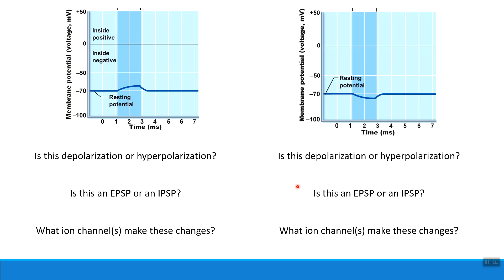We can see this when we look at the changes in membrane charge caused by a message. These two graphs show us the membrane potential, or membrane charge, for the two types of messages. In the first picture, I see a neuron at resting potential — its normal charge. Remember that neurons are normally at negative 70 millivolts. When it received a message, notice that its membrane charge got a little bit less negative, or more positive. We call this depolarization, and when the membrane charge gets more positive, we consider that an EPSP, an excitatory postsynaptic potential.